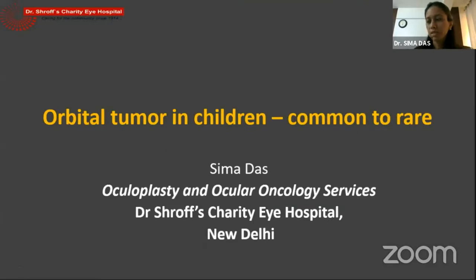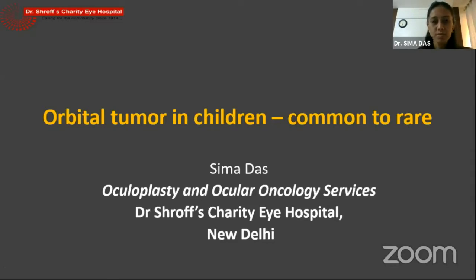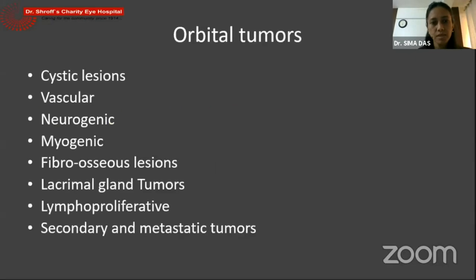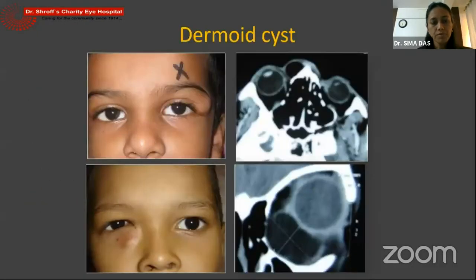So to begin this IC on pediatric ocular tumors, I'll be talking about orbital tumors in children. This is a topic very difficult to cover in 10 minutes, so I'll just stick to some common scenarios and few uncommon scenarios that we see in the clinics. We all know the classification — it can arise from any structure in the orbit, right from the blood vessels, from the glandular structures, muscles.